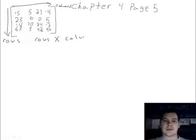So this is chapter four, page five. This is going to be number one. If we have this one over here, we want to count this. The rows are going to be one, two, three, and four.